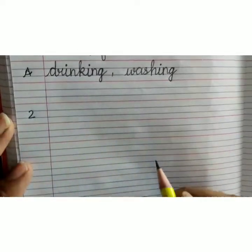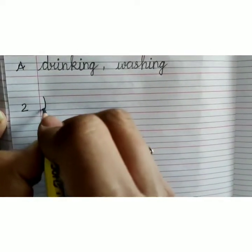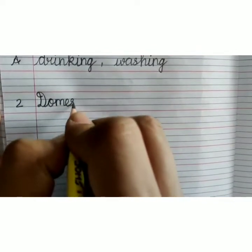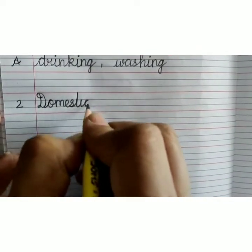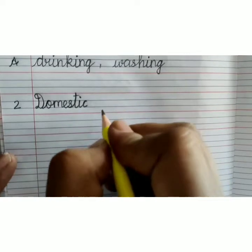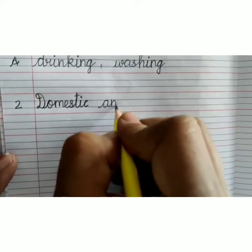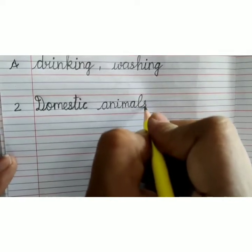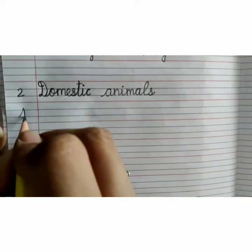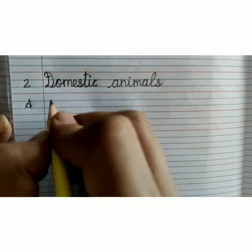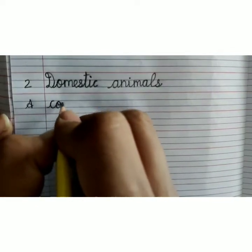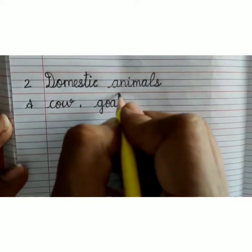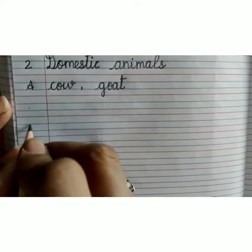Now leave one line, write number 2. Capital D-O-M-E-S-T-I-C, domestic, A-N-I-M-A-L-S, domestic animals. In next line, answers: C-O-W, cow, comma, G-O-A-T, goat.